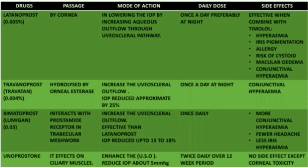If latanoprost is combined with timolol it is most effective. Its side effects include hyperemia, iris pigmentation, allergy, risk of cystoid macular edema, and conjunctival hyperemia. The second drug is travoprost, also known as Travatan, used at 0.004% concentration. It is hydrolyzed by corneal esterase, and its mode of action is to increase uveoscleral outflow, reducing IOP by approximately 25%. Daily dose is once a day at night.